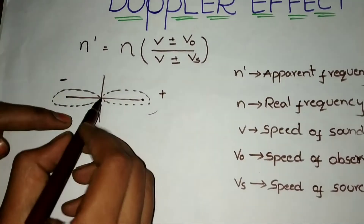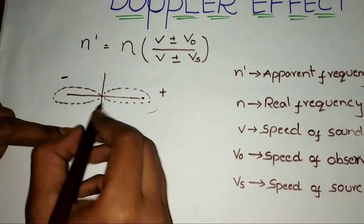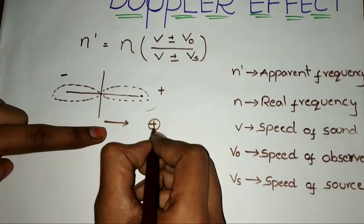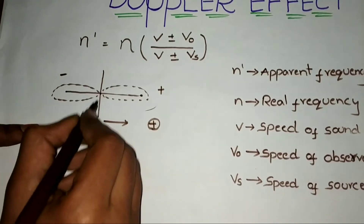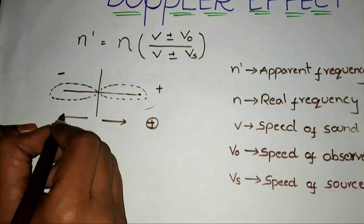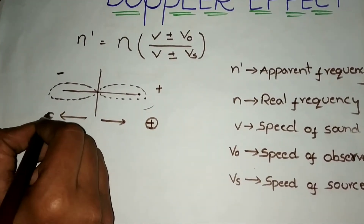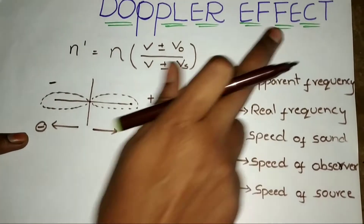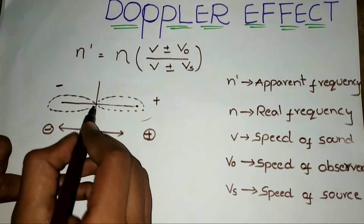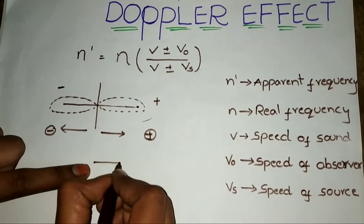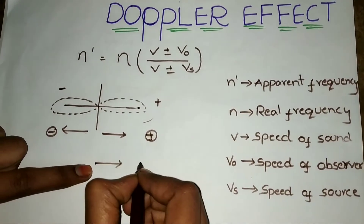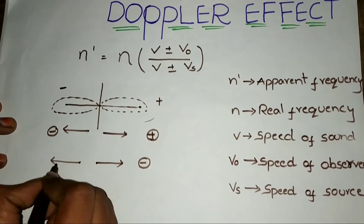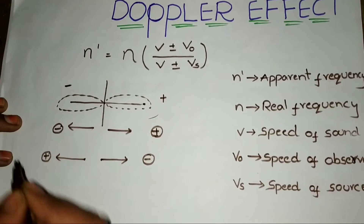When you move from 0 in the positive direction, it is positive. If you move from 0 in the negative direction, it is negative. For the Doppler effect trick: when something is moving in the negative direction, take it as negative; when moving in the positive direction, take it as positive.